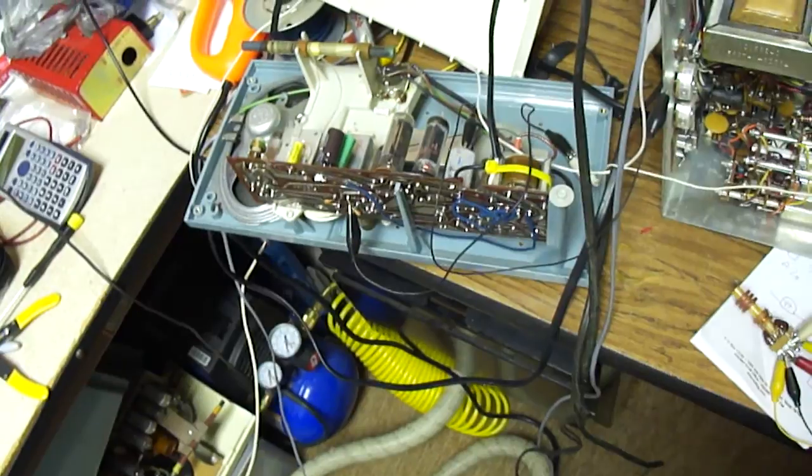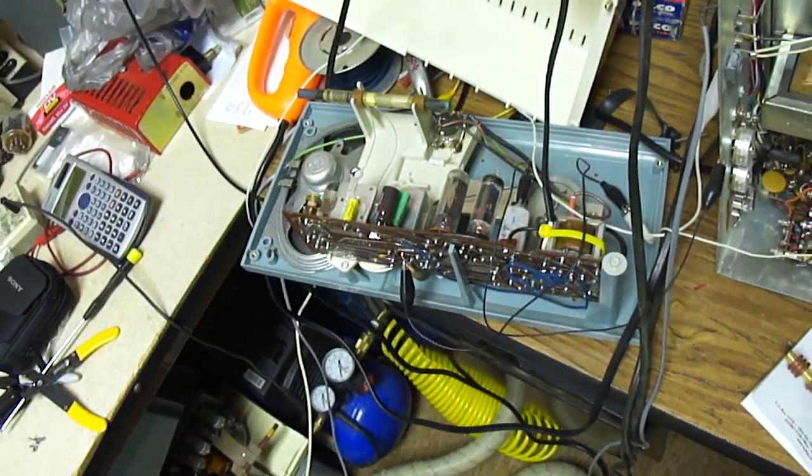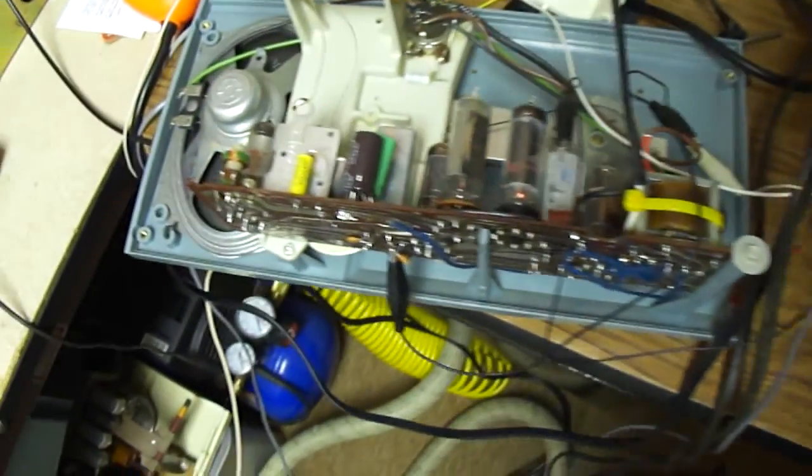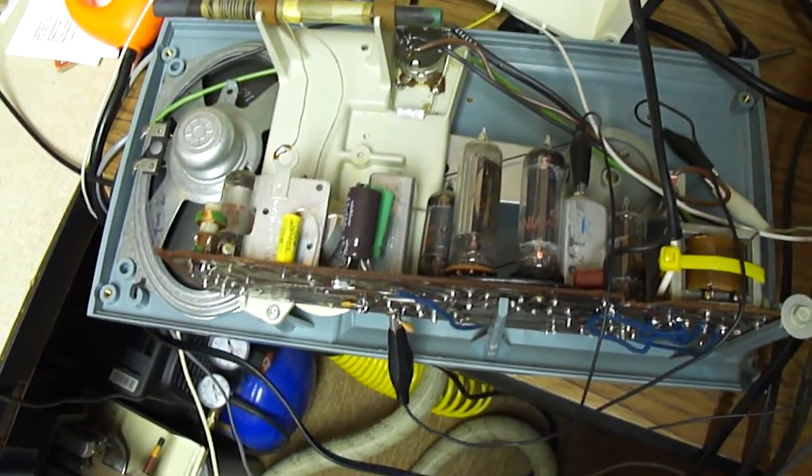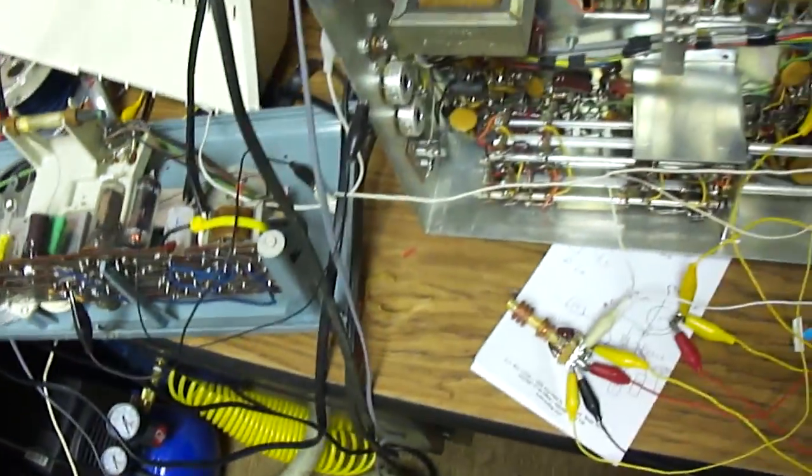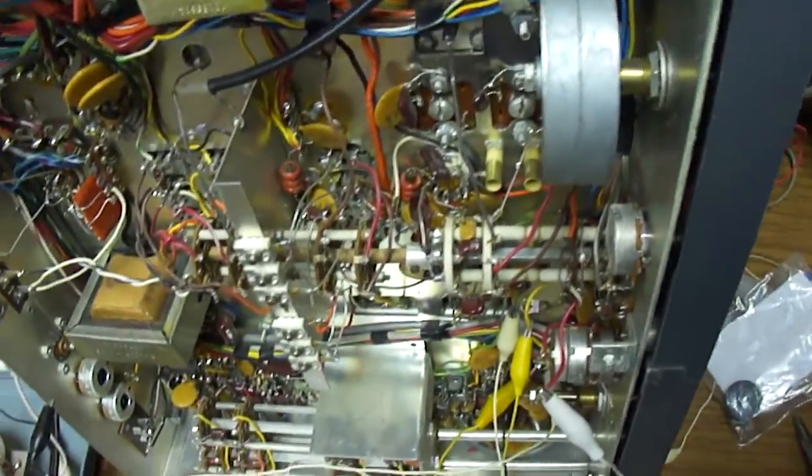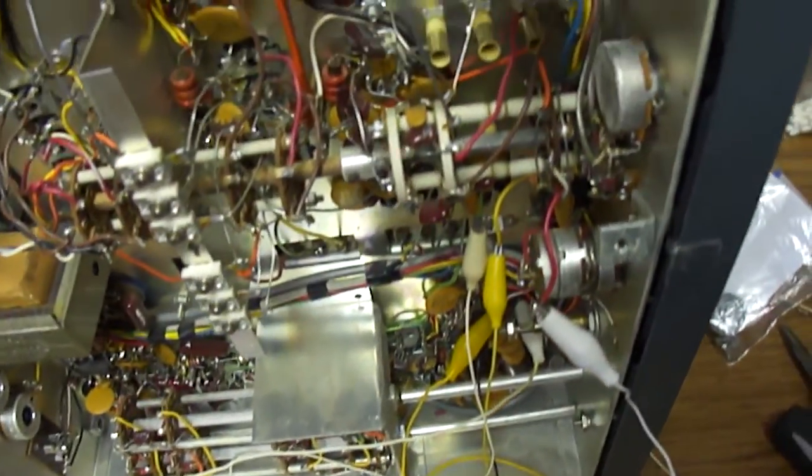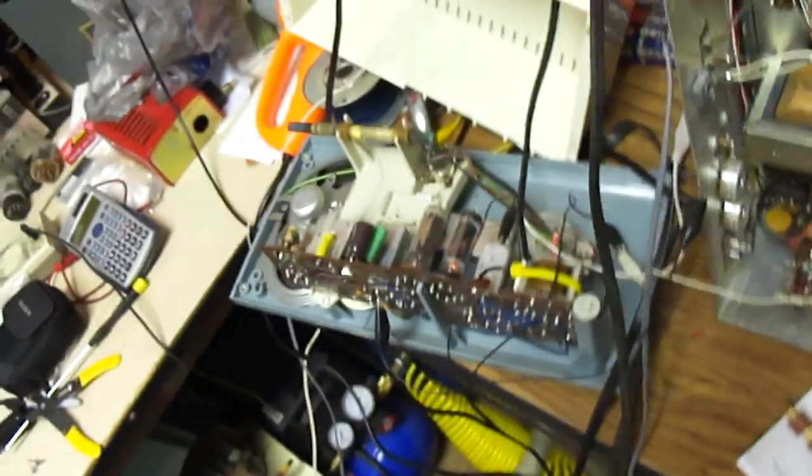Now this isn't going to have nearly the sensitivity that the actual Hammerland setup would because this is not precisely aligned to the Hammerland's IF and it doesn't have any more IF stages active than the table radio would. It's going right out of the converter of the Hammerland into the table radio. We're going to adjust the antenna to get a little more gain.